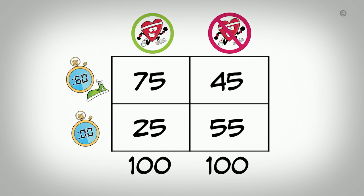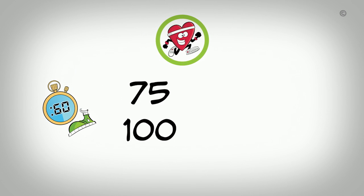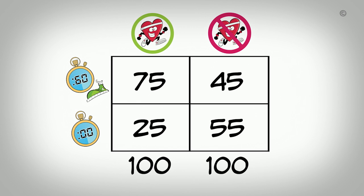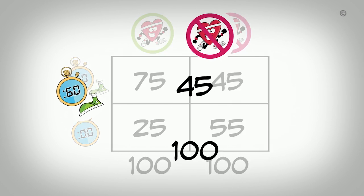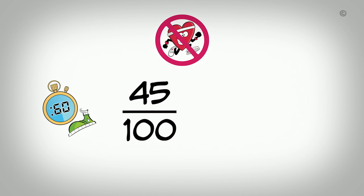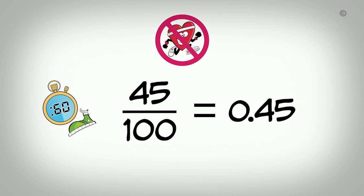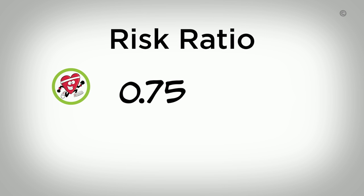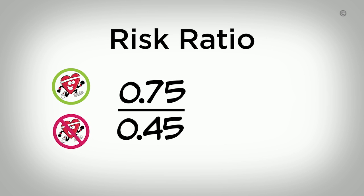To calculate the likelihood of participating in physical activity among those exposed to the intervention, we divide those participating in an hour of physical activity by the total number exposed: 75 divided by 100, which gives us a likelihood of 0.75. Among those not exposed to the intervention, we divide the number who participated in physical activity by the total not exposed: 45 divided by 100, which gives us a likelihood of 0.45. To calculate the RR, we divide 0.75 by 0.45, which gives us an RR of 1.67.